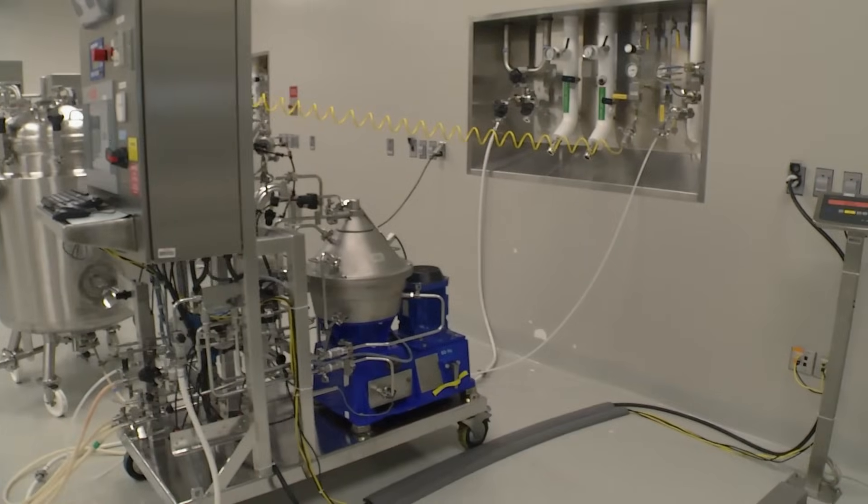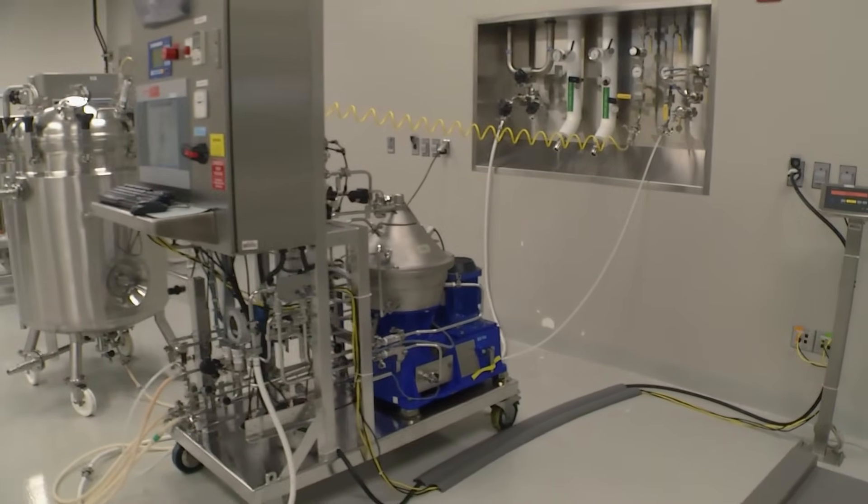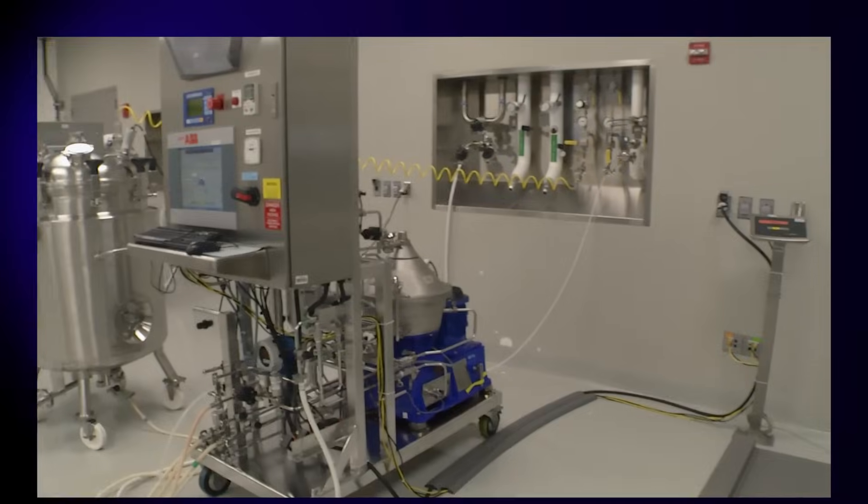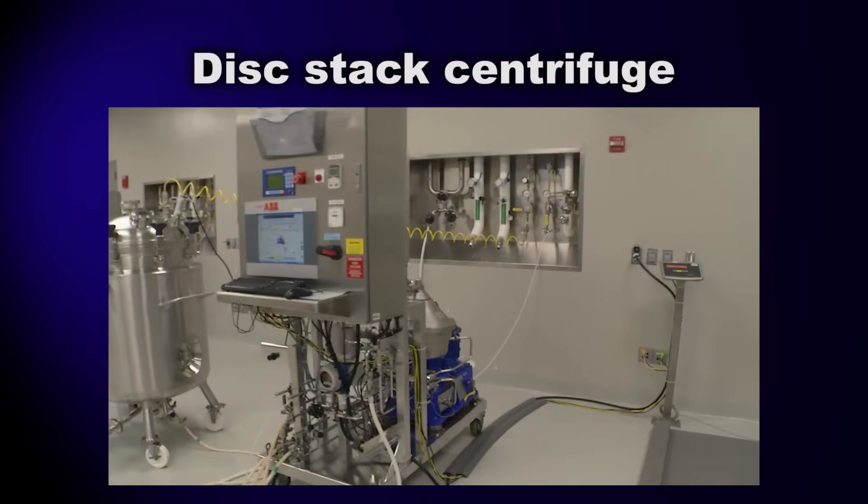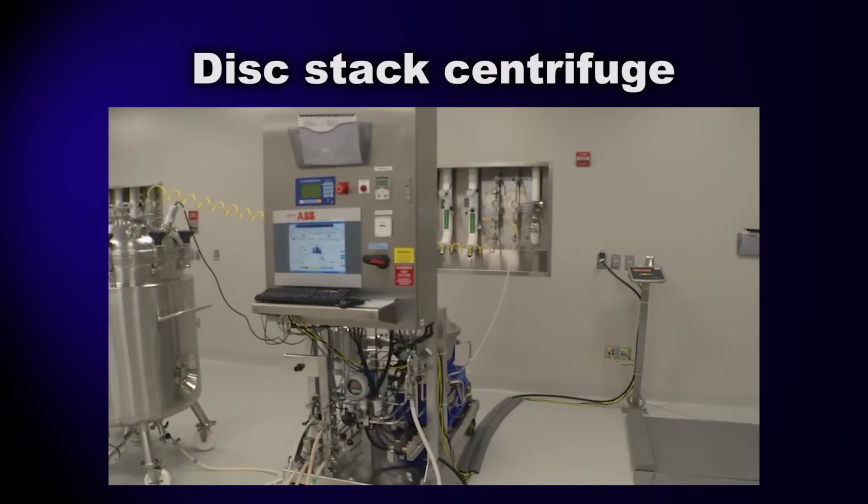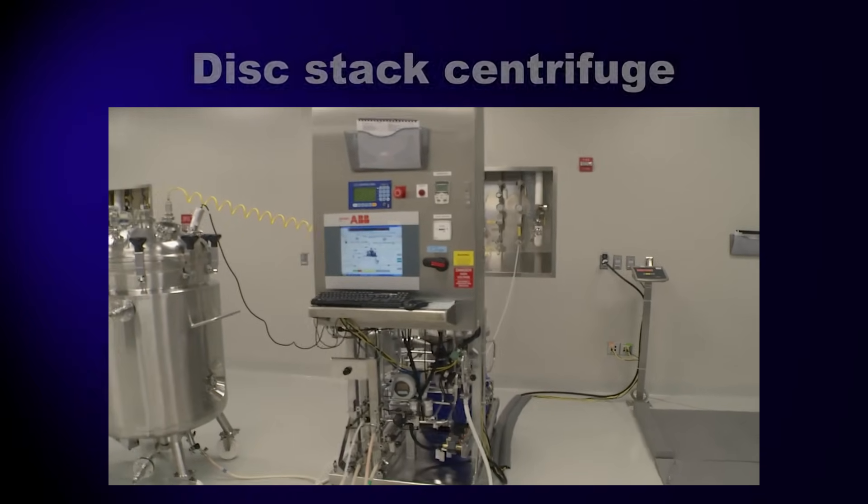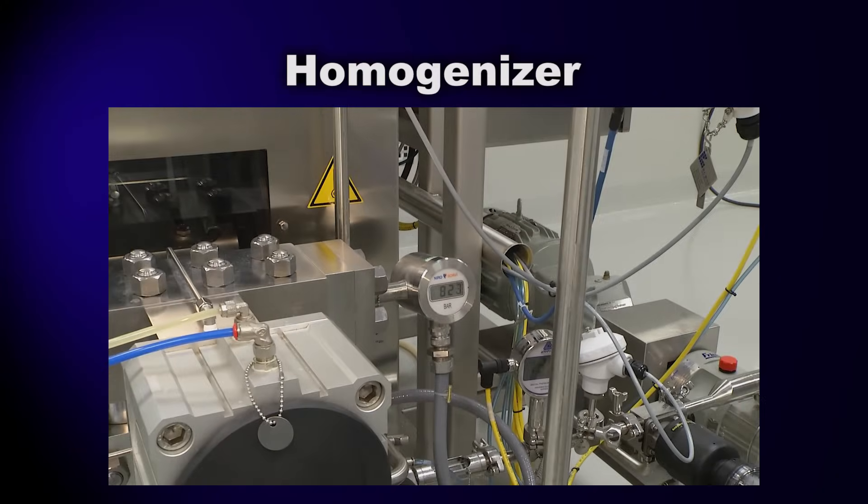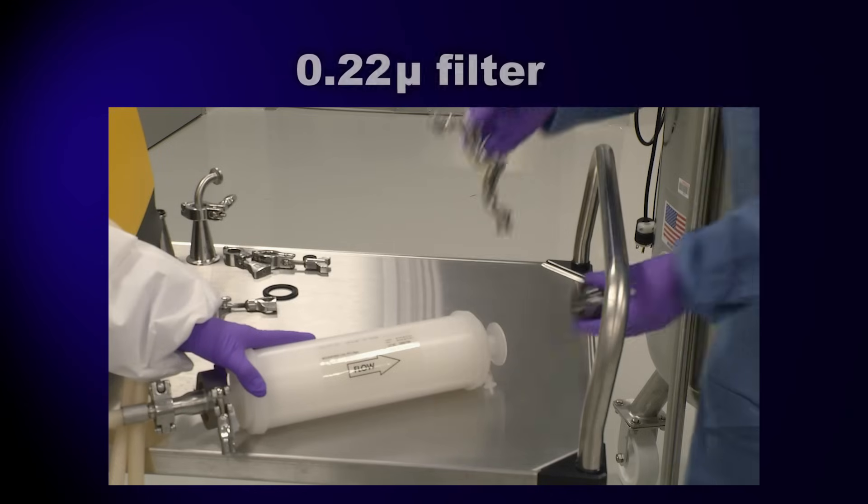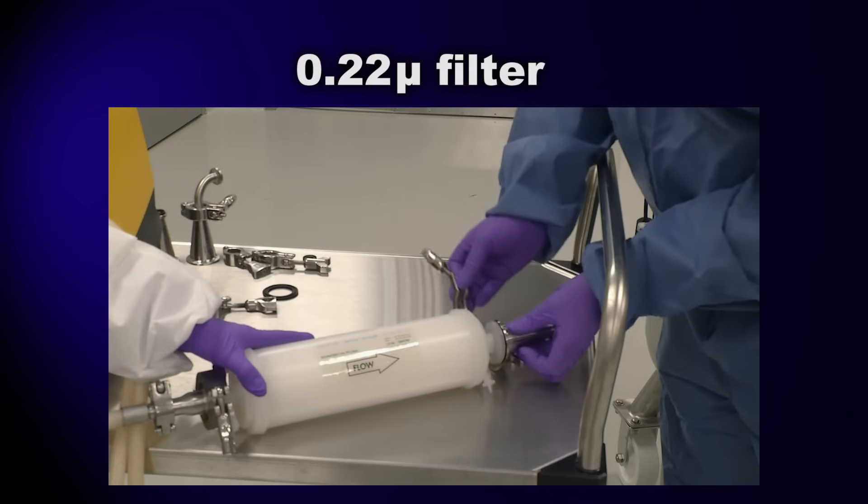Let's start with the tools we'll use in the green fluorescent protein recovery process. Those would include a disk stack centrifuge to separate solids from liquids, a homogenizer to break open the E. coli cells, and a 0.22 micron filter to separate any remaining solids in the product solution.